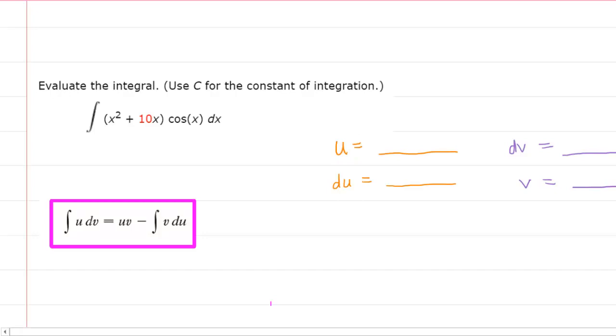A good rule of thumb is that you should always let u equal the function whose derivative becomes a simpler function.